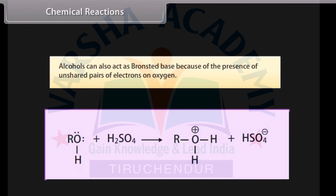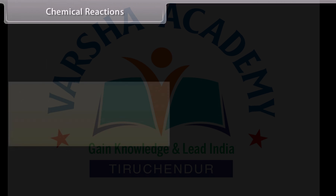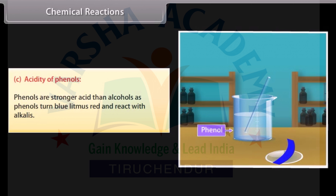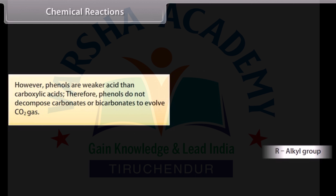Alcohols can also act as Bronsted bases because of the presence of unshared pairs of electrons on oxygen. Phenols are stronger acids than alcohols, as phenols turn blue litmus red and react with alkali. However, phenols are weaker acids than carboxylic acids, and therefore phenols do not decompose carbonates or bicarbonates to evolve carbon dioxide gas.